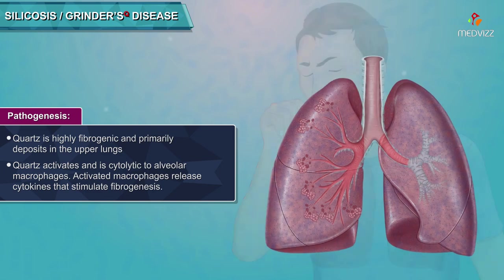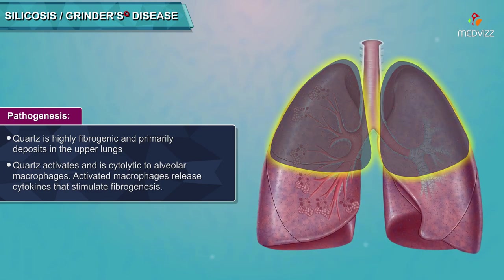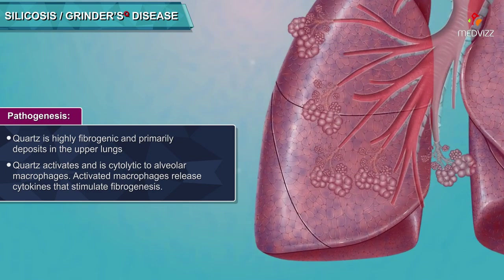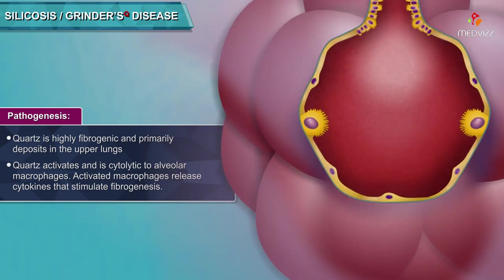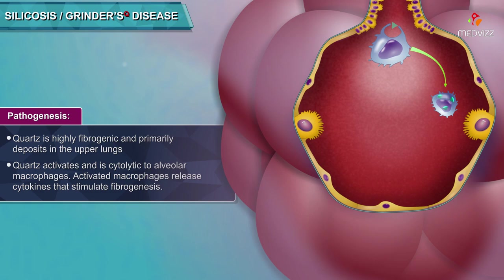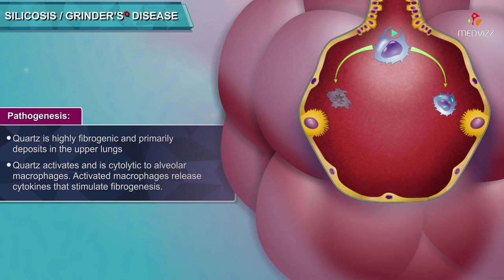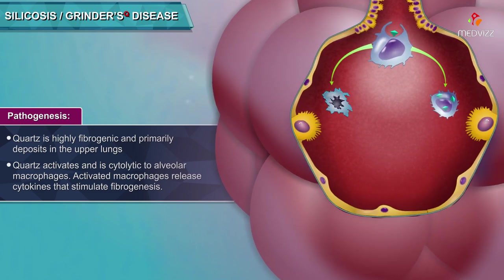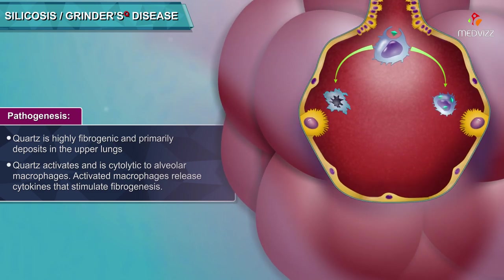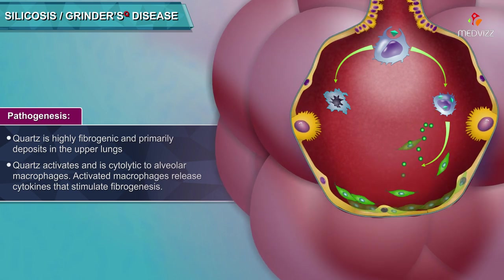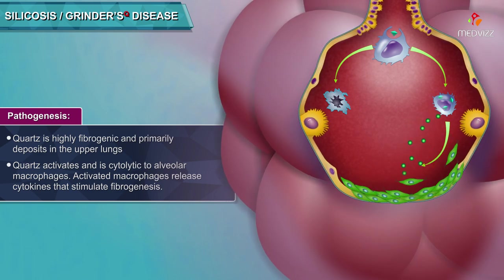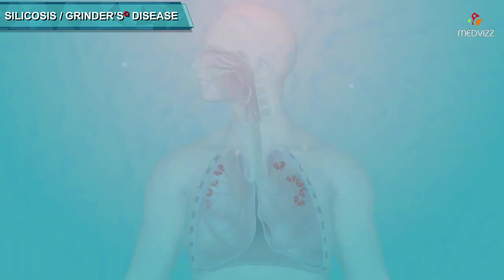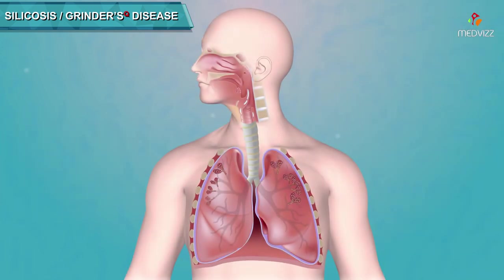Pathogenesis: Quartz is highly fibrogenic and primarily deposits in the upper lungs. Quartz activates and is cytolytic to alveolar macrophages. Activated macrophages release cytokines that stimulate fibrogenesis.